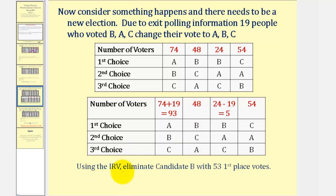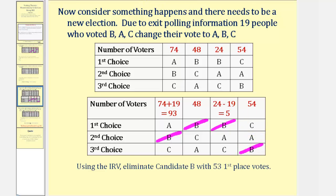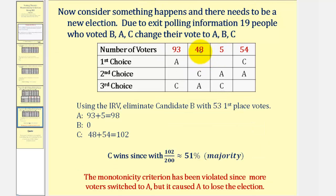So let's use this new table and apply instant runoff voting. Notice in this case, candidate B has a total of 48 plus 5, or 53 first place votes, and candidate C has 54. So using instant runoff voting, we would eliminate candidate B from the election. If we eliminate candidate B, or delete B from the table, notice how this caused these 48 votes to be assigned to C, and these 5 votes to be assigned to A. So candidate A now has 93 plus 5, or 98 votes, candidate B has 0, and candidate C now has 48 plus 54, or 102 votes.